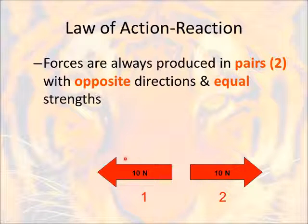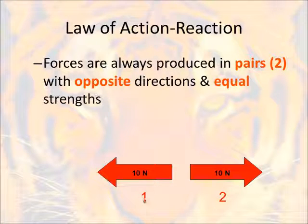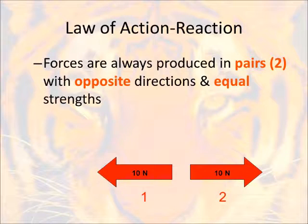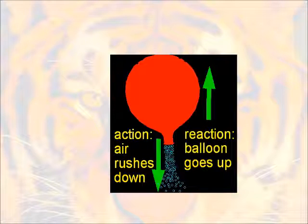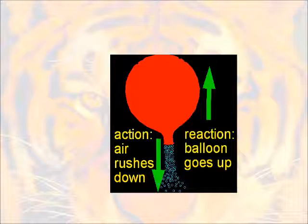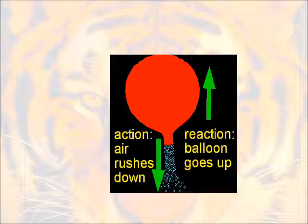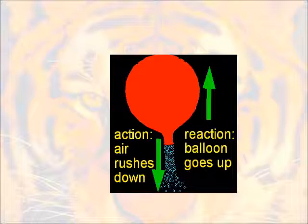If you think about it like drawing a force diagram: if you had 10 newtons to the left as your first force, then there's got to be a force of 10 newtons to the right as the second force. A really classic example is a balloon. As we fill a balloon up with air and open it, there's an action — the air rushes down out of the balloon. The equal and opposite reaction causes the balloon to go the other direction — it goes up.